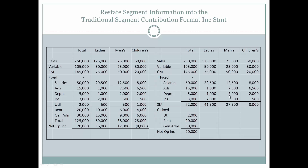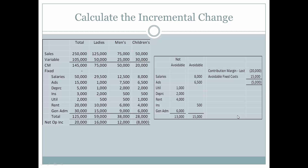We can see this if we look at the difference when we had the restated traditional segment contribution format income statement — the children's department is now contributing $3,000 towards the common fixed expenses, whereas before it was seen as having a loss of $8,000. The difference of $5,000 is the incremental change, which we can calculate more quickly by looking at the contribution margin lost and deducting the avoidable fixed expenses, giving a total loss of $5,000.